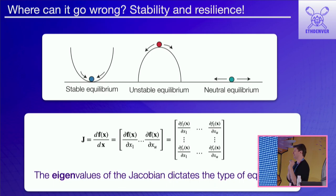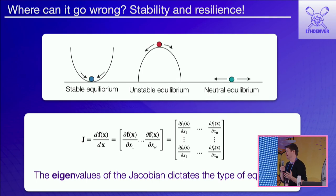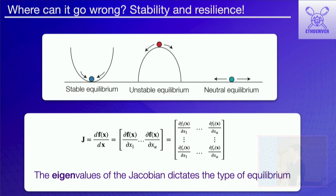It's a dynamical system — you can solve a matrix. The eigenvalues of that matrix tell you about the type of equilibrium. Whatever parameters you throw at this equation, you can solve a simple eigenvalue problem and mathematically demonstrate whether you're stable, unstable, or neutral in your token supply.